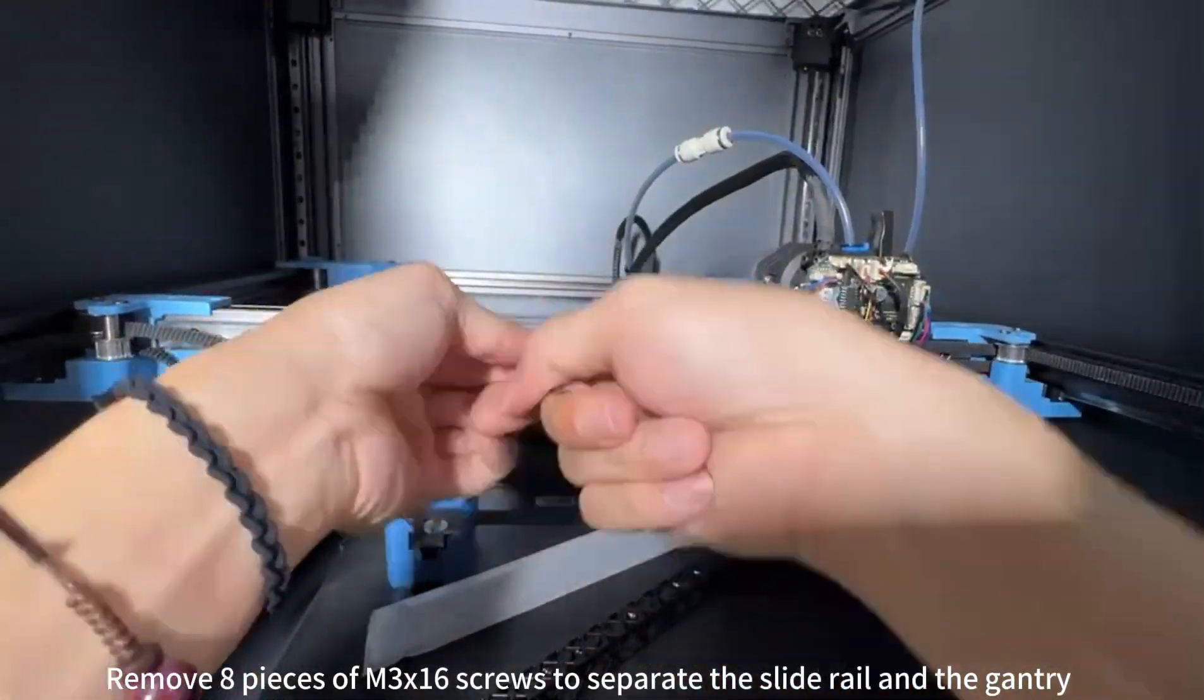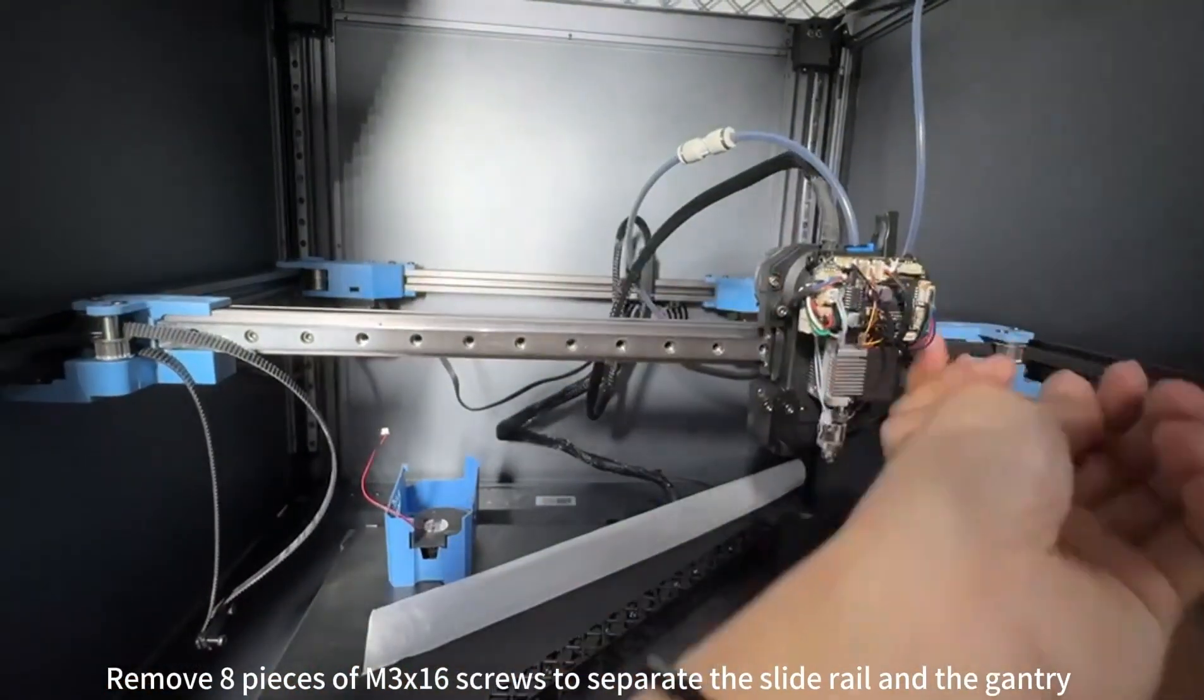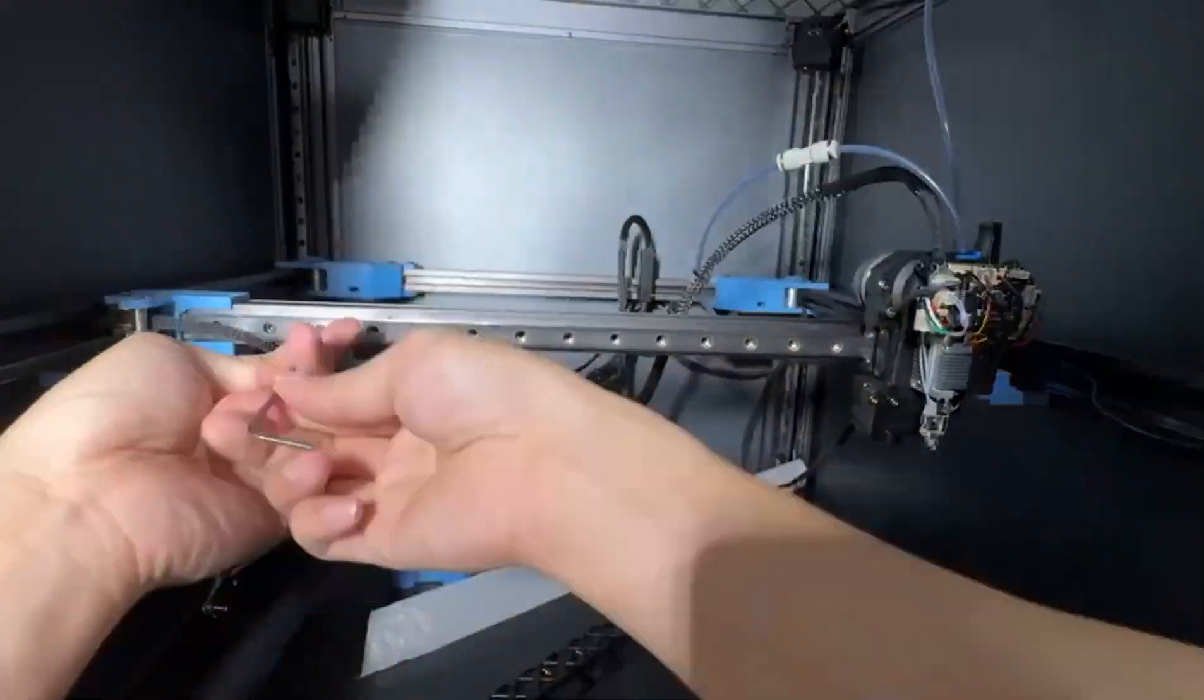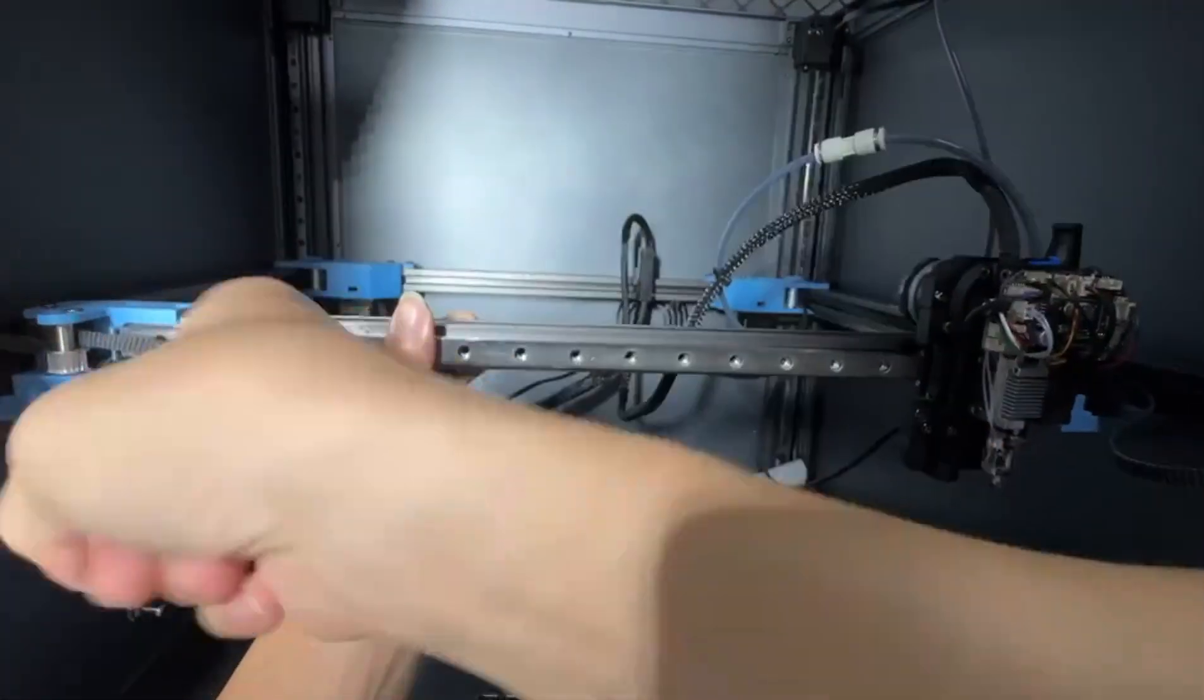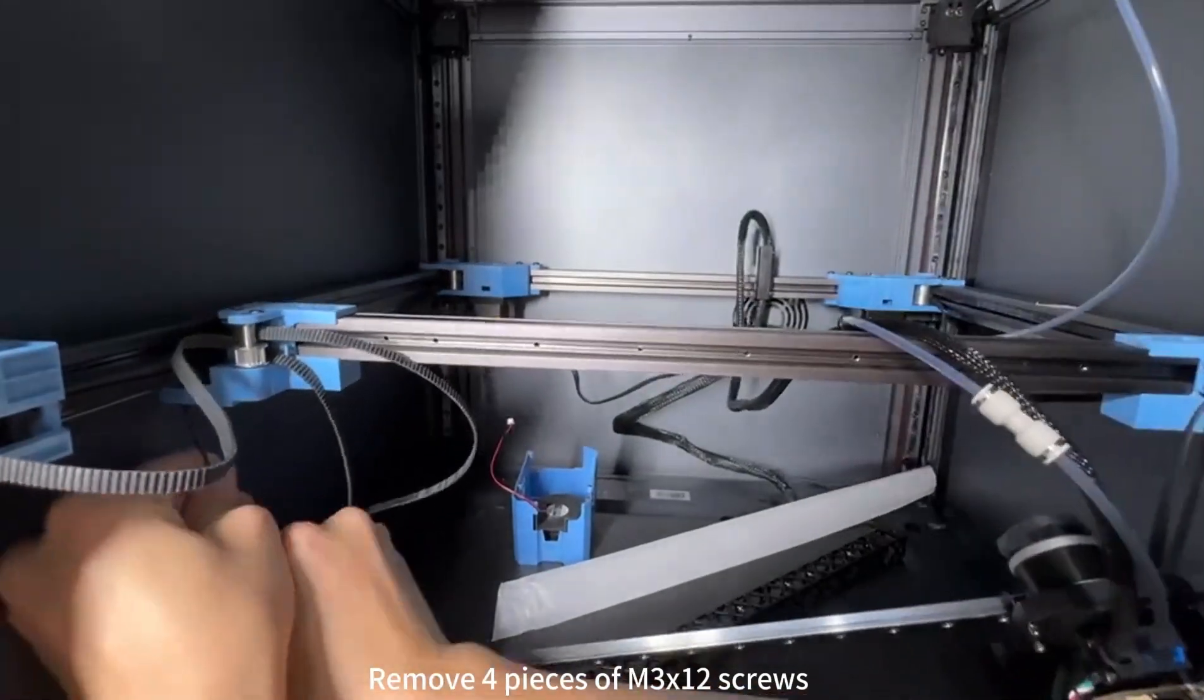Remove eight pieces of M3 by 16 screws to separate the slide rail and the gantry. Remove the pieces of M3 by 12 screws.